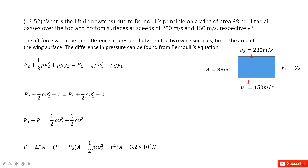Now, how can you find the lift force? The lift force comes from the pressure difference at position 1 and position 2. If you find the difference in pressure and multiply by the cross-sectional area, that gives you the lift force. So how can you find the difference in pressure?